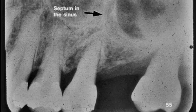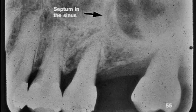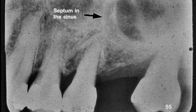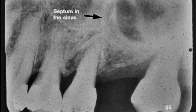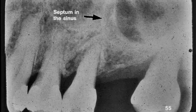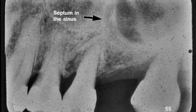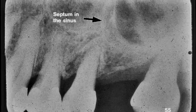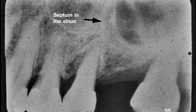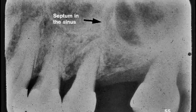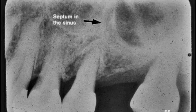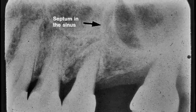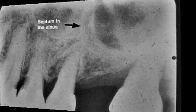In the maxillary posterior region, sometimes we see septa in the sinus. There can be more than one, or there can be none. They are radiopaque and extend vertically in the sinus. They are partitions of bone.